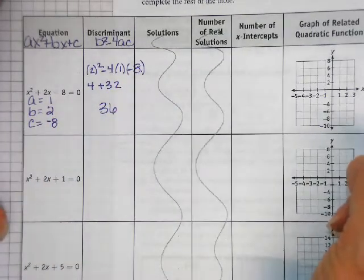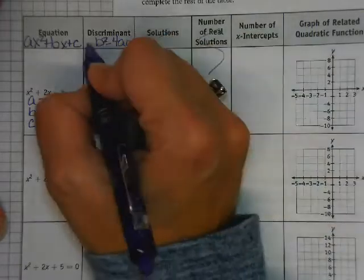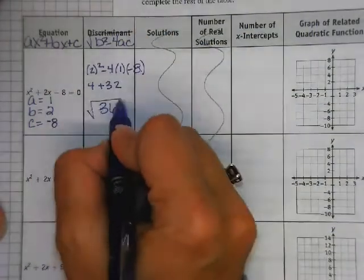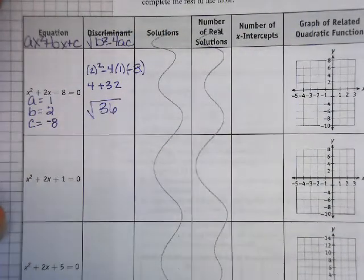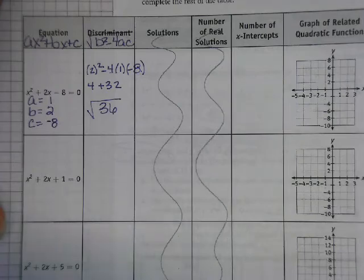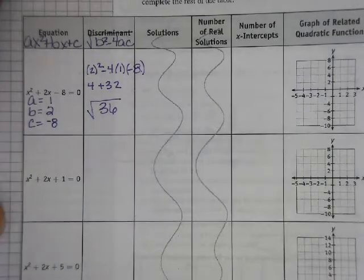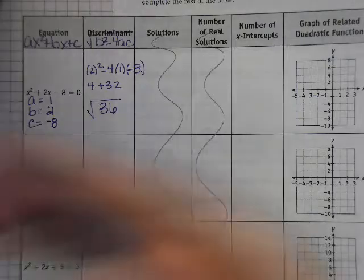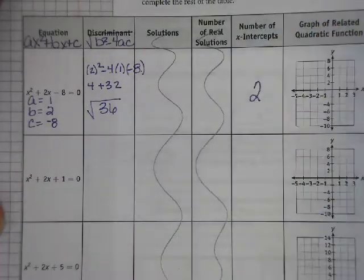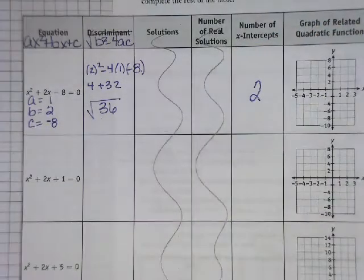Remember, you are going to have to take the square root of that. Can you take the square root of 36? Yes. Plus or minus 6. So how many x-intercepts do you think there will be? Just 2. There will not be 6. Not on a quadratic.